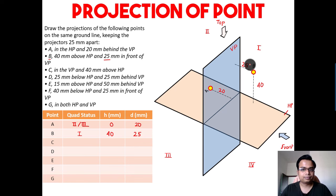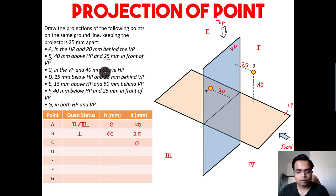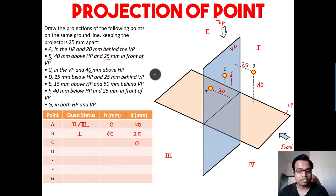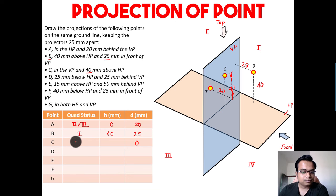Point C is in the VP, so its distance from the VP is zero — d equals zero. It is also 40mm above the HP, so h equals 40. This places point C right on the VP. Some may say it's first quadrant, some may say second quadrant — it's actually a border case of both first and second quadrant.